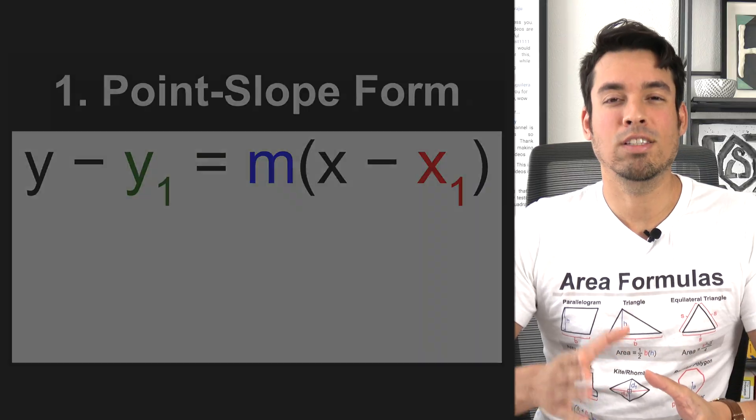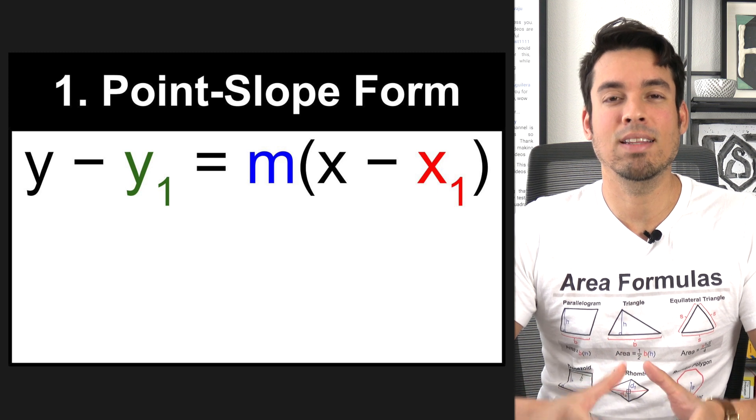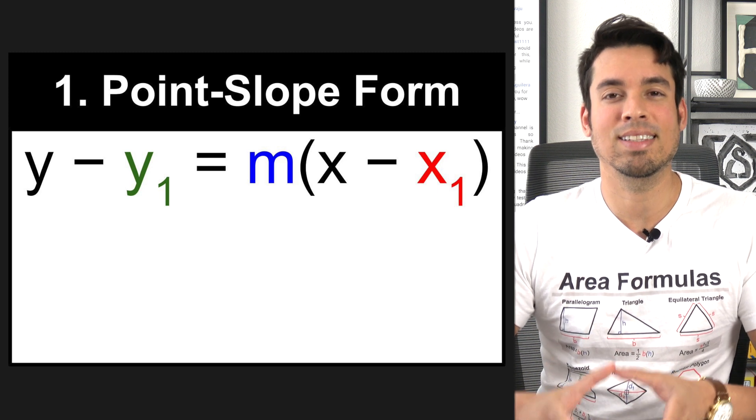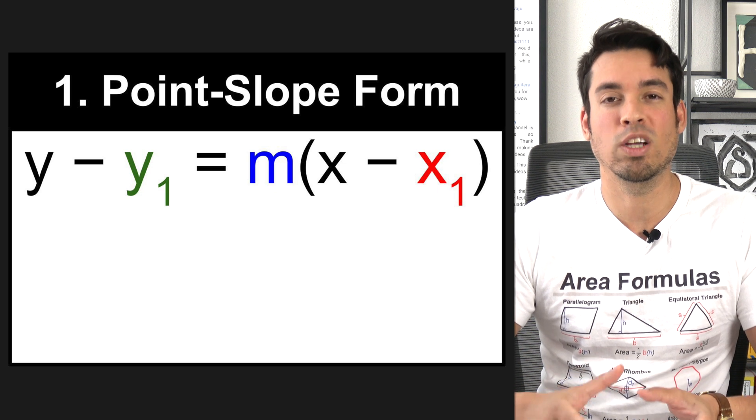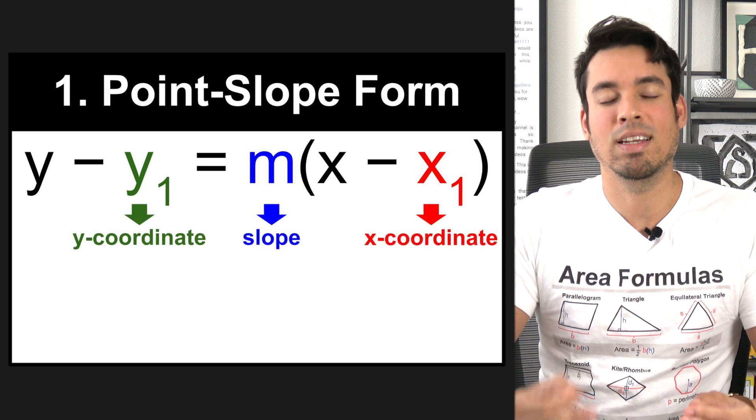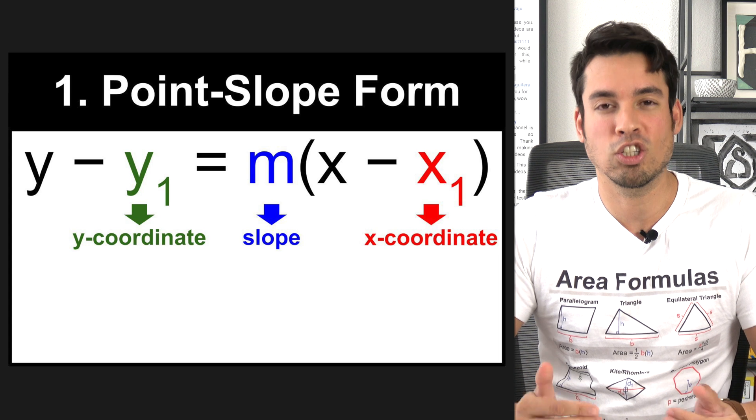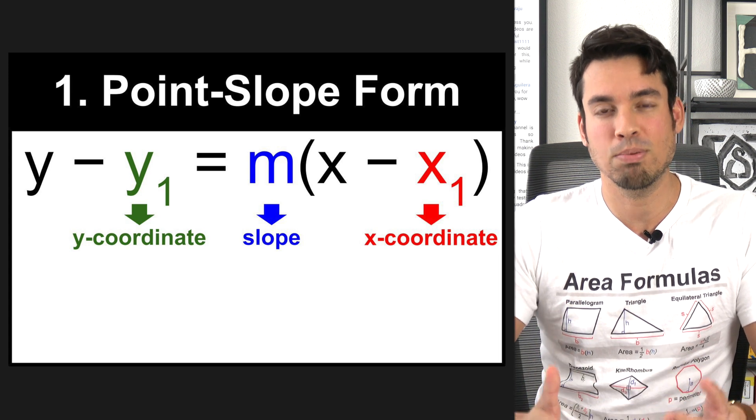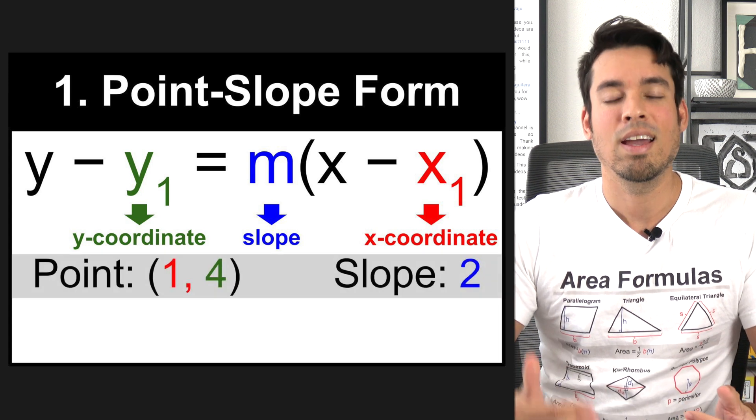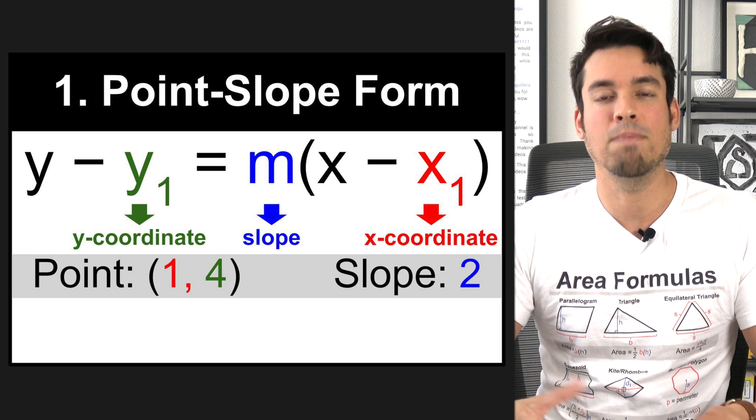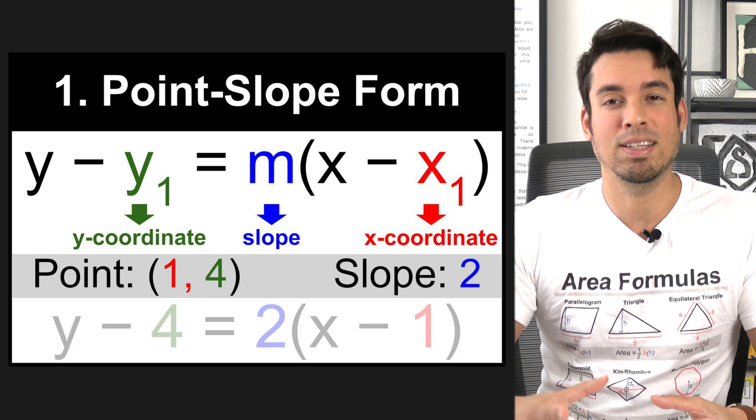Formula number one is point slope formula. Now, the most important formula on this test is going to be slope intercept when you're talking about linear equations, but point slope can be great, and it can shave a little bit of time off questions. For example, if you know a coordinate and the corresponding slope of a line, you can put those together to make the complete linear equation.